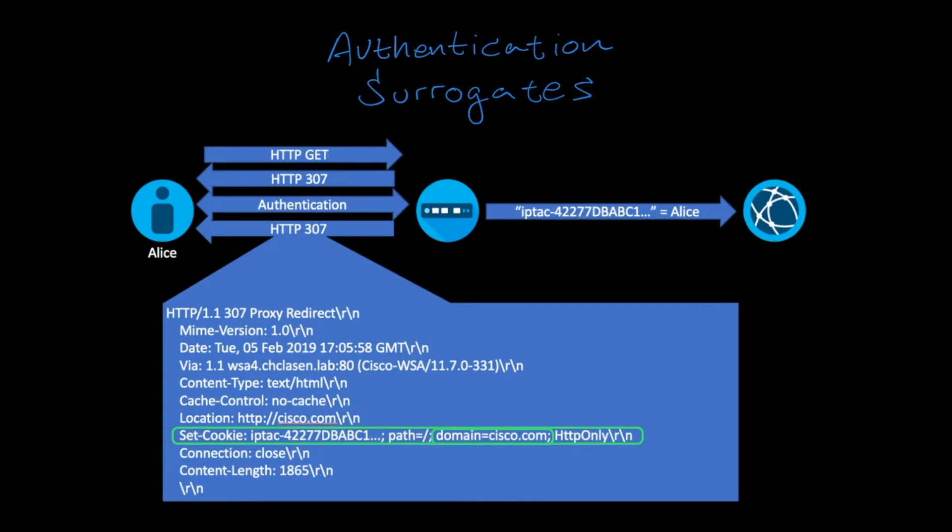For example, if the cookie was set when visiting Cisco.com, the cookie is only valid for Cisco.com. If the user opened a new tab and navigated to Facebook.com, they would be forced to authenticate again.